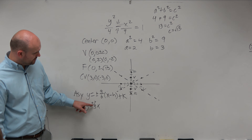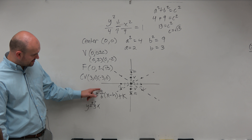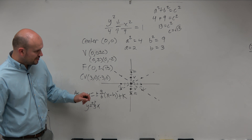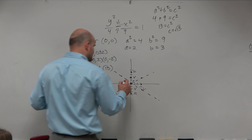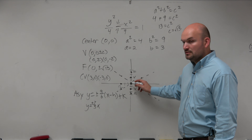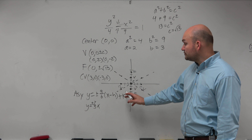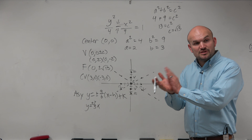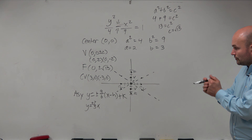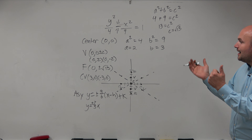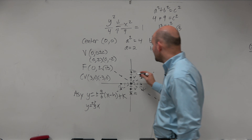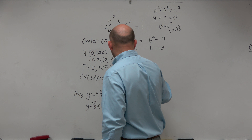Your asymptotes are plus or minus a over b times x, because h and k are both 0 — so it's just rise over run, up 2 over 3. You have two asymptotes because it's plus or minus, giving you a positive slope and a negative slope. Now I have my vertices, my foci, and my asymptotes, so I can go ahead and sketch my graph.